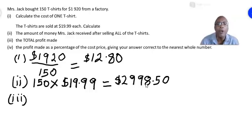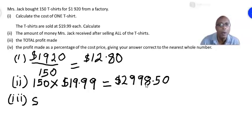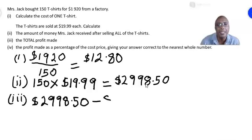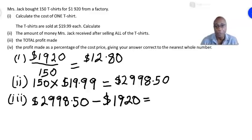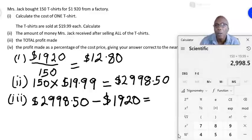Let's go to part three: the total profit. To find the profit, we subtract the cost price from the selling price. The selling price of all t-shirts is $2,998.50 and the cost price is $1,920. Using the calculator: 2998.50 minus 1920 equals one thousand and seventy-eight dollars and fifty cents.